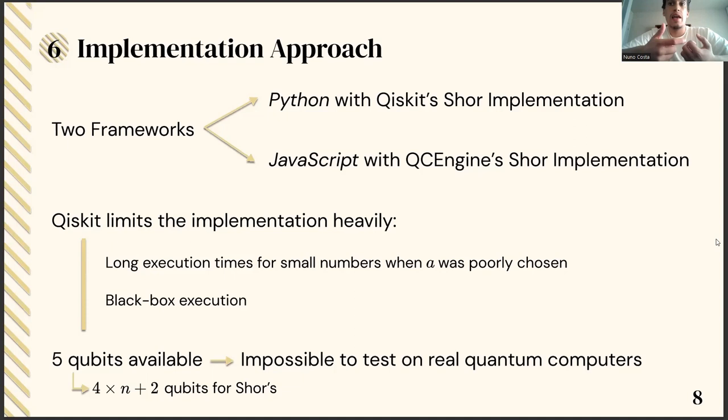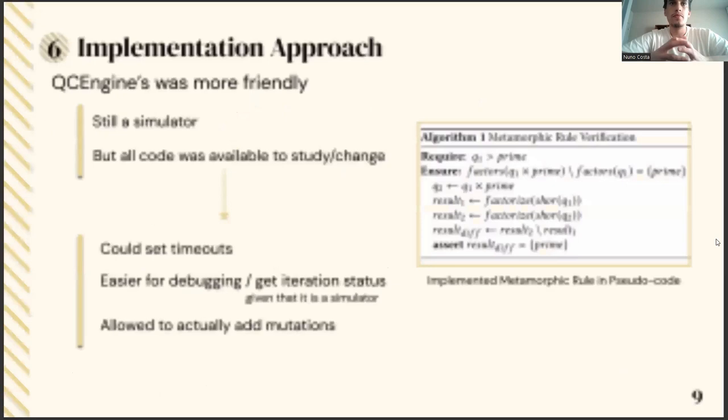Introducing non-optimized values for the parameter a, which is the parameter of Shor's, would many times lead to the program not returning anything at all. We also couldn't use anything other than a simulator, as the number of available qubits at IBM for general users was five. But to factor a number with n-bit digits, we would need four times n plus two qubits, which in turn means we couldn't even factor the number one using real quantum computers.